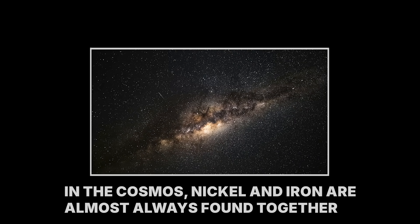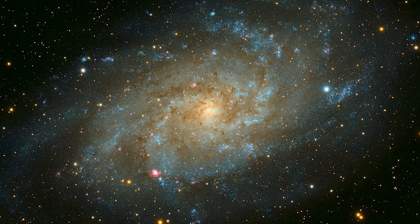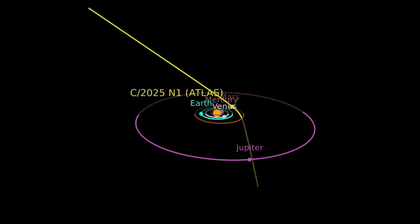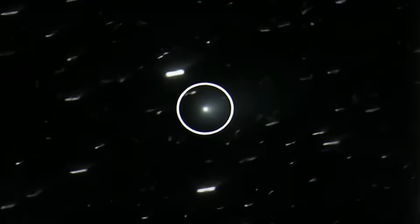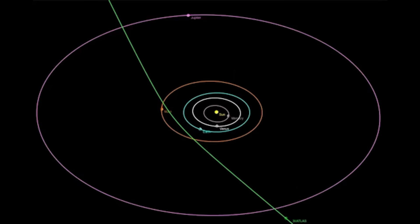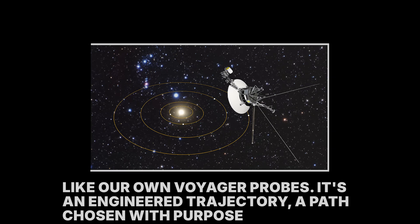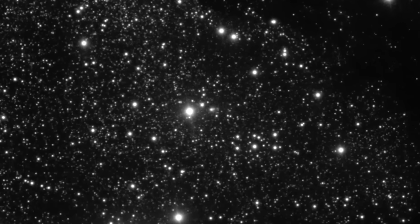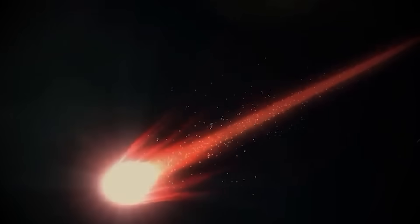In the cosmos, nickel and iron are almost always found together. To find one without the other is like finding a forest with no trees. It just doesn't make sense. It suggests that the object isn't a natural formation, but something that has been manufactured. And here's the real kicker. The object's trajectory is almost perfectly aligned with the plane of our solar system, the same flat plane that all the planets orbit on. This is incredibly rare for an interstellar visitor. It's the kind of trajectory you would choose if you wanted to get a close look at multiple planets on a single flyby, just like our own Voyager probes. It's an engineered trajectory, a path chosen with purpose.